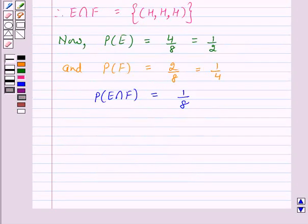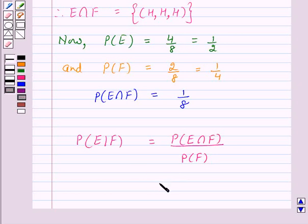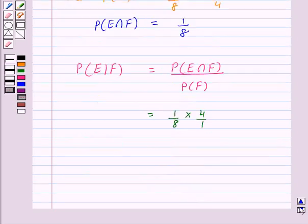Now according to our key idea, probability of E upon F is equal to probability of E intersection F upon probability of F, and this is equal to 1 upon 8 into 4 upon 1, which is equal to 1 over 2.